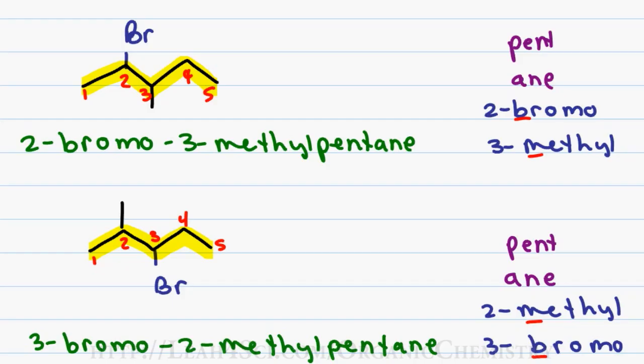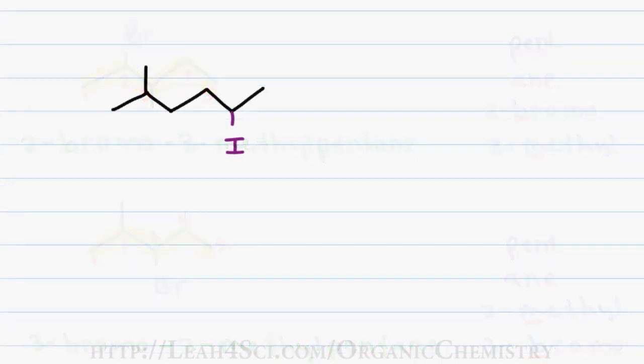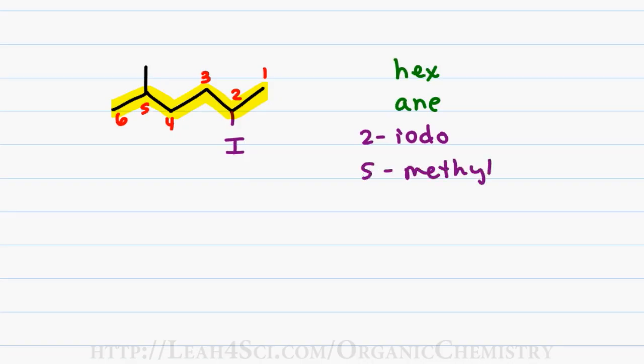But what happens when you have both a carbon and a halogen at the same position? In this molecule I can number from the left getting 2-methyl or number from the right to get 2-iodo. In this case you take alphabetical order into account. Since I comes before M, we start numbering from the right so that iodo will come before methyl. Since I have a total of 6 carbons in my parent chain, I have a first name of hex, having only single bonds gives me ane. Iodine having the higher alphabetical priority gives me 2-iodo. Methyl having the lower alphabetical priority gives me 5-methyl for a final name of 2-iodo-5-methylhexane.